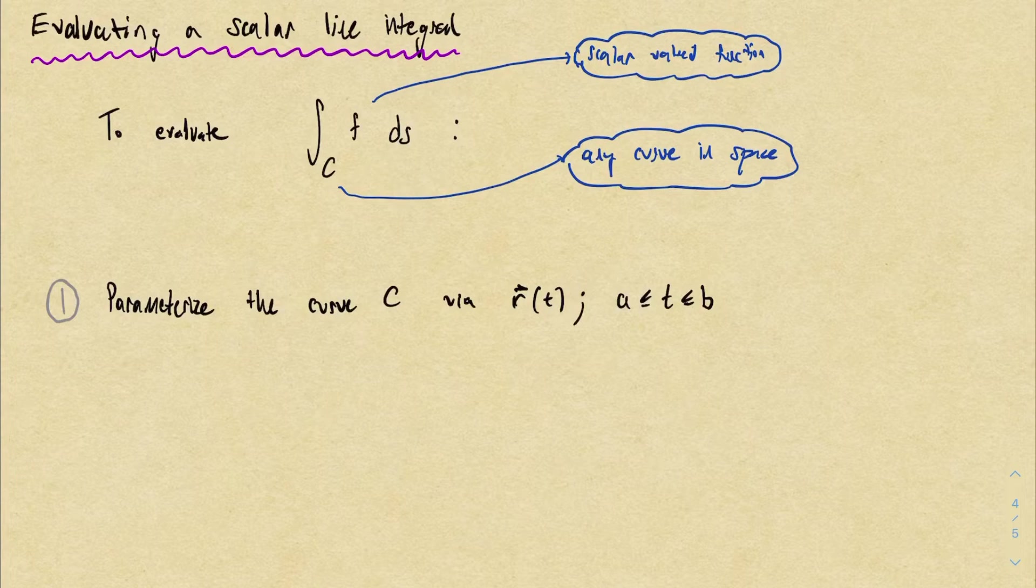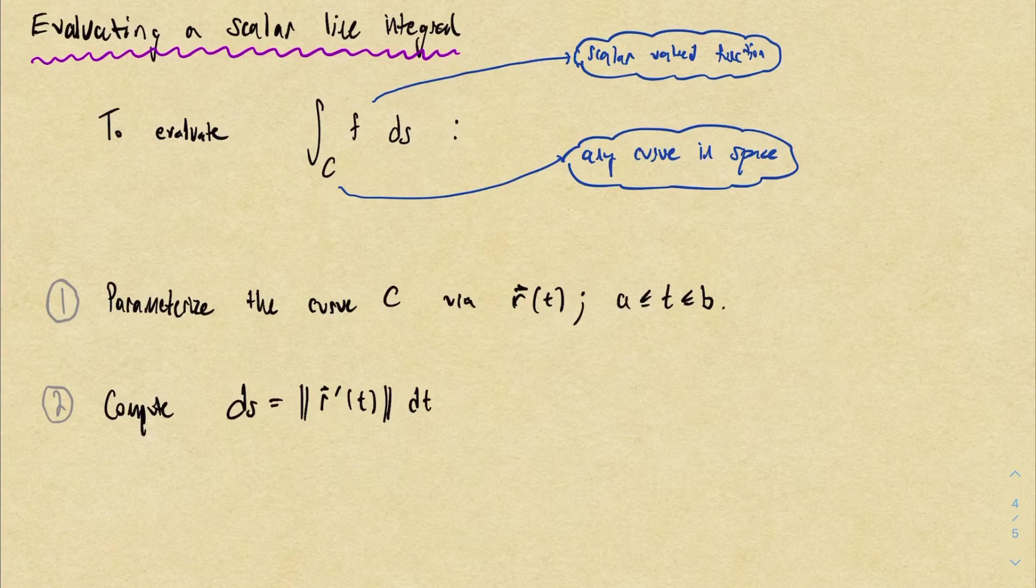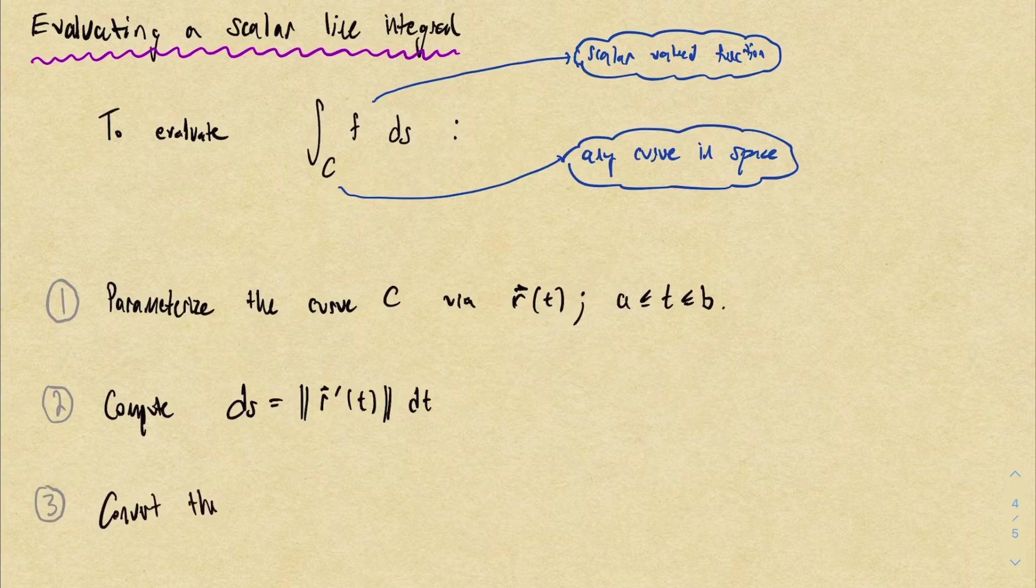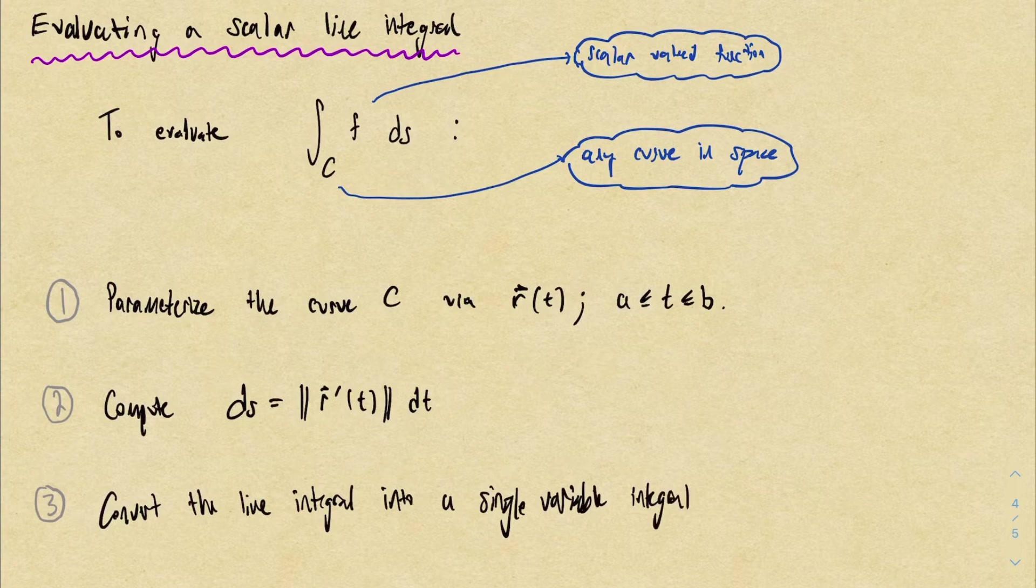Once you have a parameterization, the differential DS is the speed of the curve times dt. That is to say, to compute DS we'll take the norm of r prime of t. This is what approximates an arbitrarily small chunk of the curve.